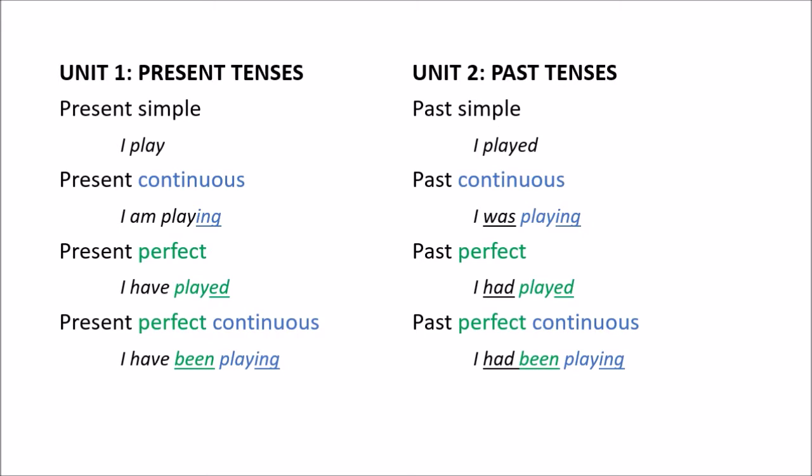But once you understand what the present perfect and the present perfect continuous is, the past perfect and the past perfect continuous are really easy. 'I have played' — the present form of 'to have' followed by the past participle — simply turns into 'I had played.' And the nice thing is, 'had' goes for all forms: 'I had played,' 'you had played,' 'he had played,' 'we had played,' and 'they had played.'